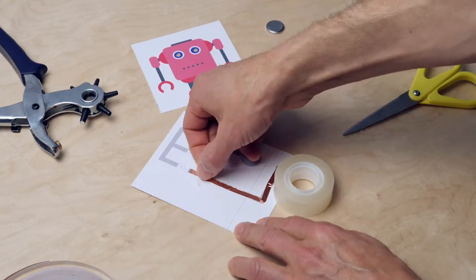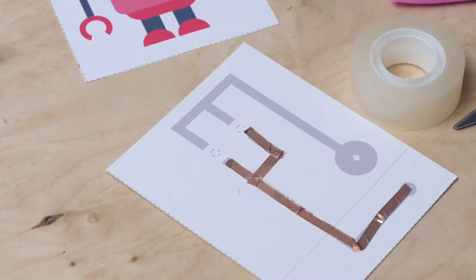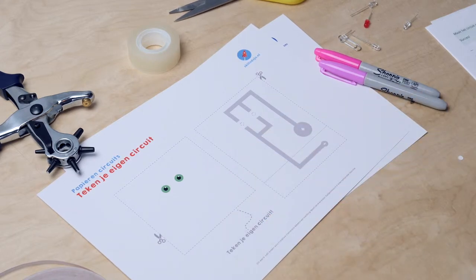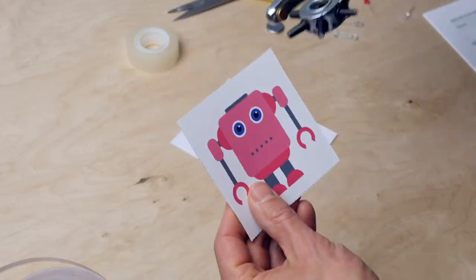Your turn! Jay will show it one more time and then you may try and do it yourself. On this worksheet, draw your own monster, animal, comet character, zombie or robot and design your own circuit. Cut out everything and make holes for the LED eyes.